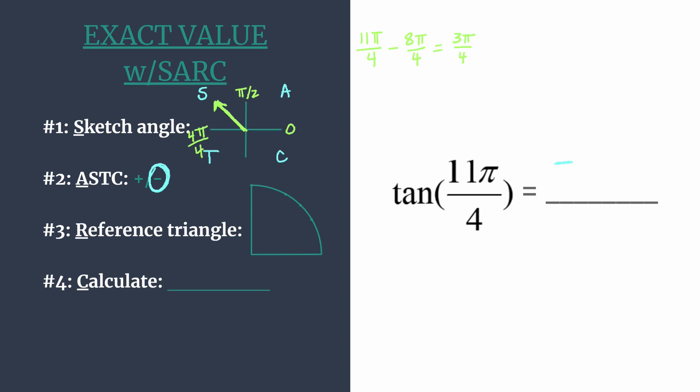Alright, now we can work on our reference triangle and getting our coordinates so that we can calculate. A reference angle is simply the amount of rotation between your terminal side and the x-axis. So the amount of rotation between 3π over 4 and 4π over 4 is just 1π over 4.